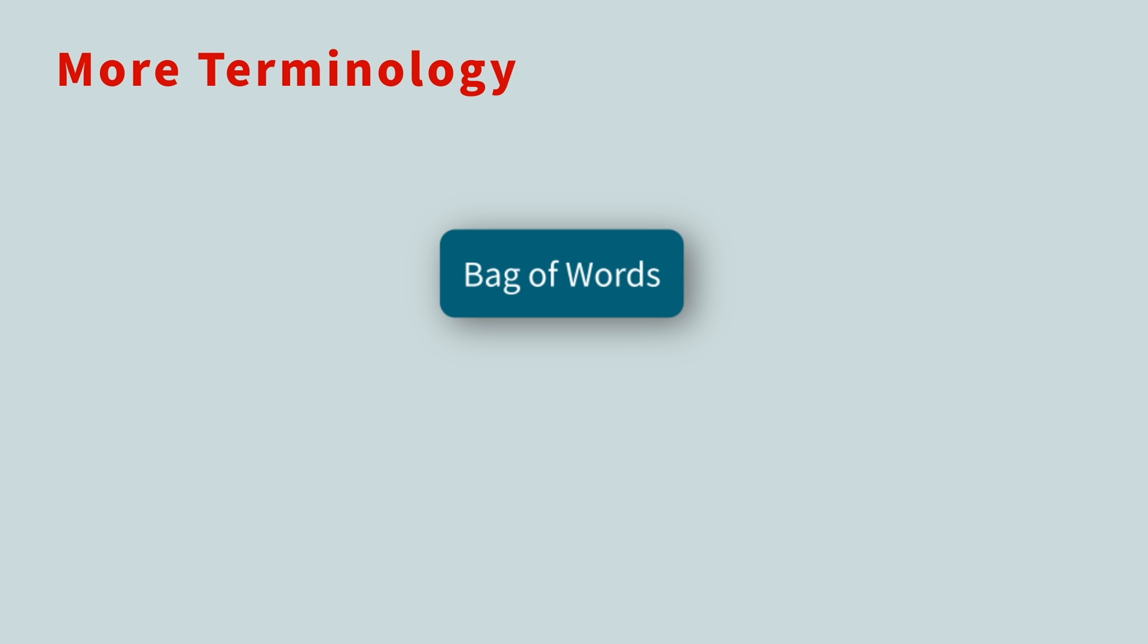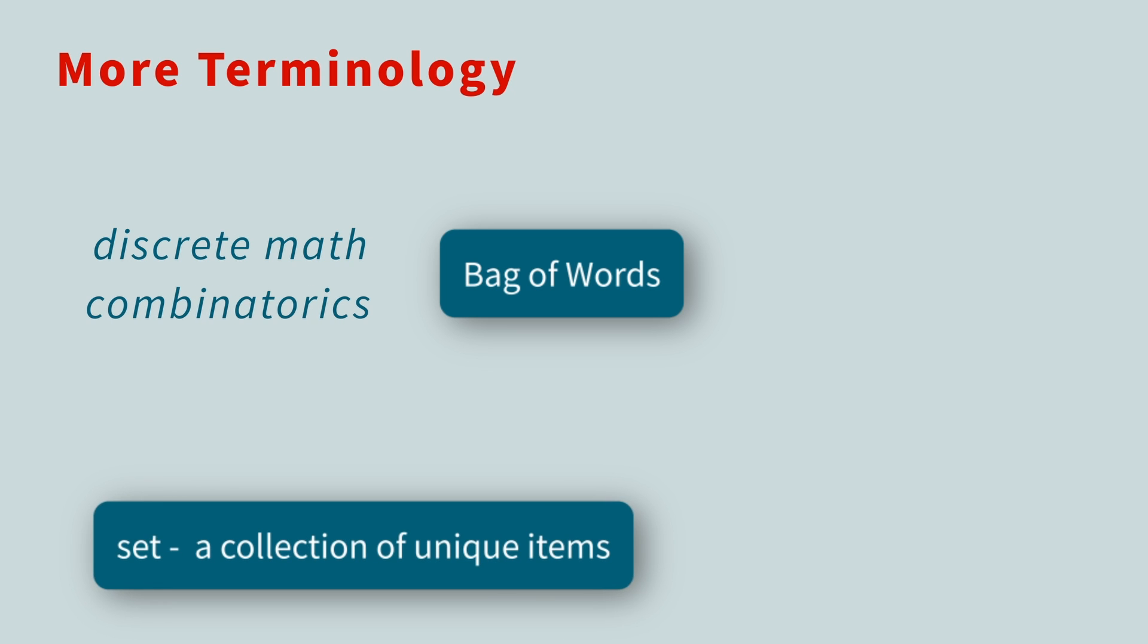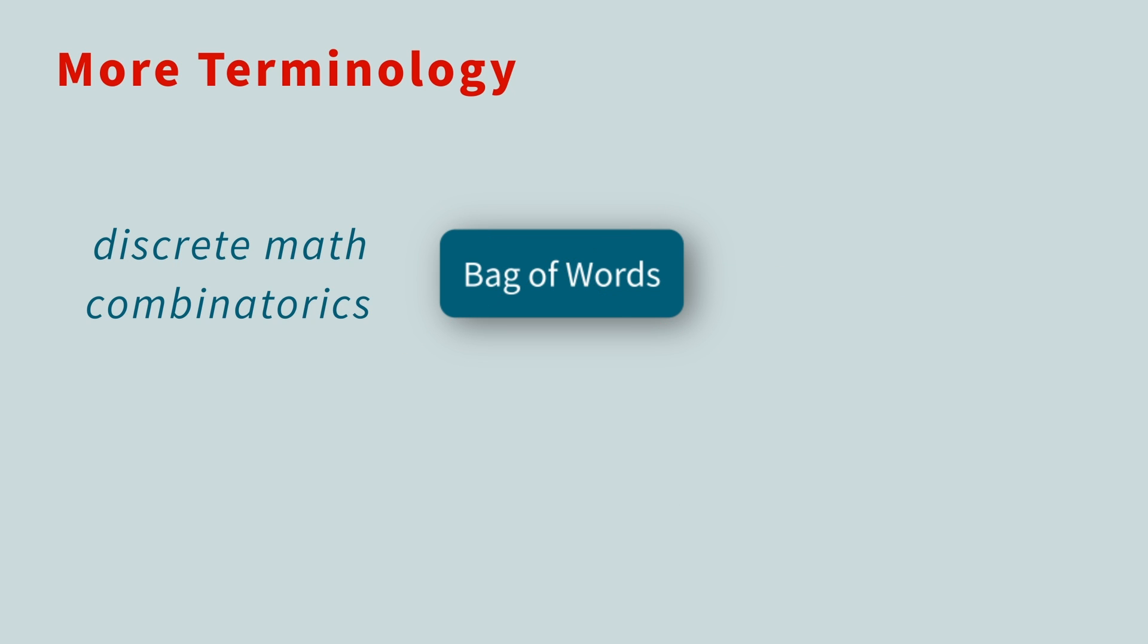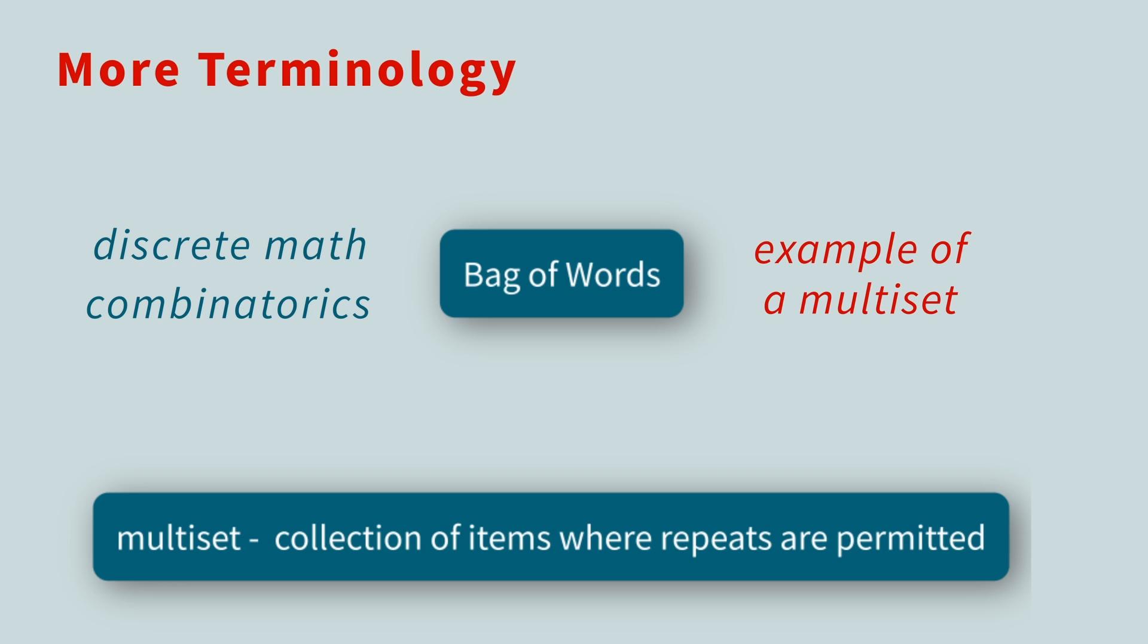A bag of words is a specific application of a more general idea that's studied in mathematics, specifically discrete math and combinatorics. In math, a set is a collection of unique items. Since a bag of words can have repeated words, it's not a set. However, it is an example of a multi-set. A multi-set is a collection of items where repeats are permitted. Tuck this away in your brain, because if you ever run into a puzzle when working with bags of words, there's a good chance that mathematicians have already solved it. But you'll need to know these math terms when cracking open that math book.